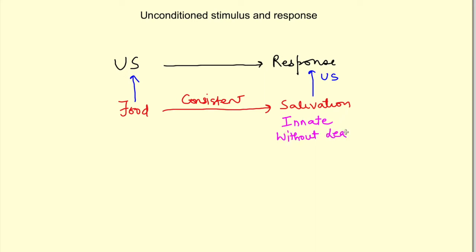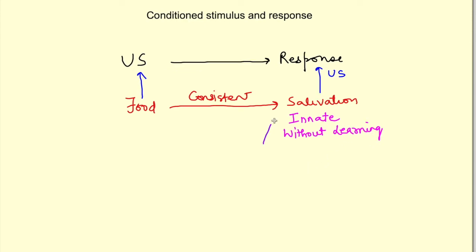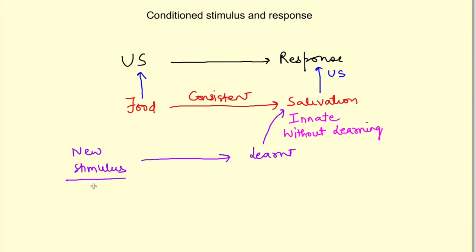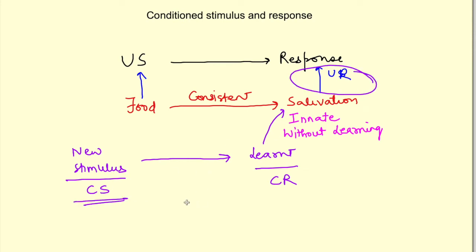This response to the unconditioned stimulus is innate and is produced without learning. Now this unconditioned response can be conditioned — that is, learned to occur with any other stimulus as well which originally did not produce this response. When that learning occurs, we call this new stimulus the conditioned stimulus, and the response becomes the conditioned response.